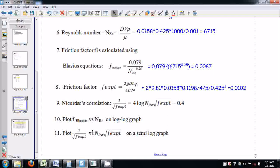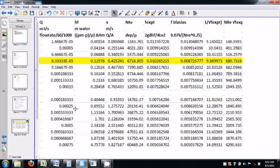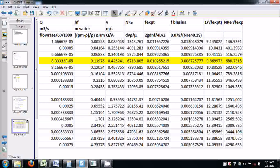Doing this experiment and Nikuradse correlation calculations for all the readings, plot a graph between F Blasius versus NRE on log-log graph. To verify Nikuradse correlation, draw a plot between 1 by root of this quantity and this quantity on a semi-log graph.